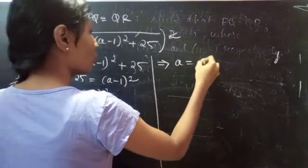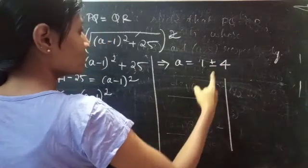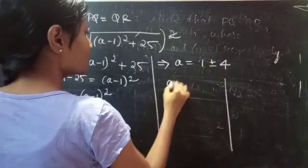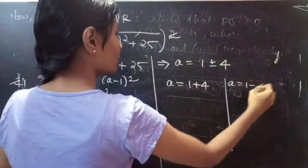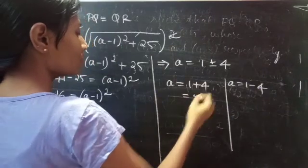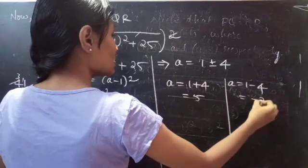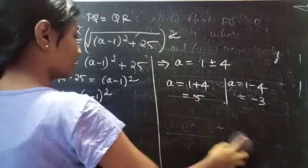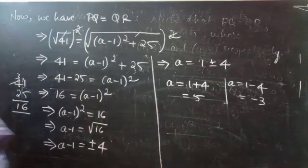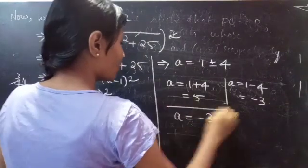So A equals 1 plus or minus 4. Splitting for plus and minus: A equals 1 plus 4, and A equals 1 minus 4. So A equals 5 or A equals minus 3. Therefore, the values of A are A = 5 or A = −3.